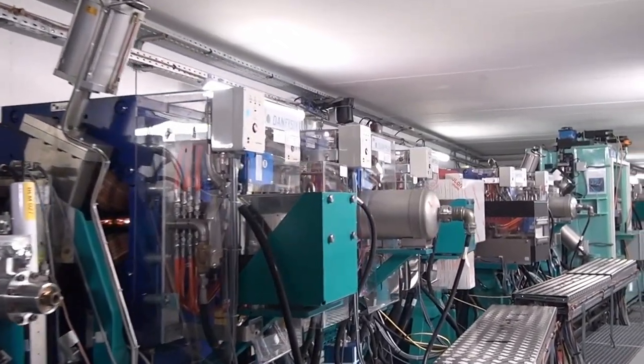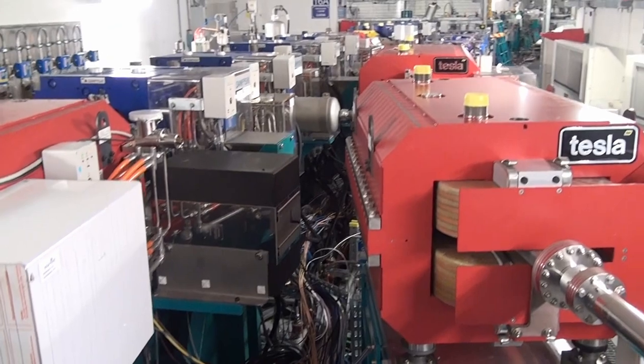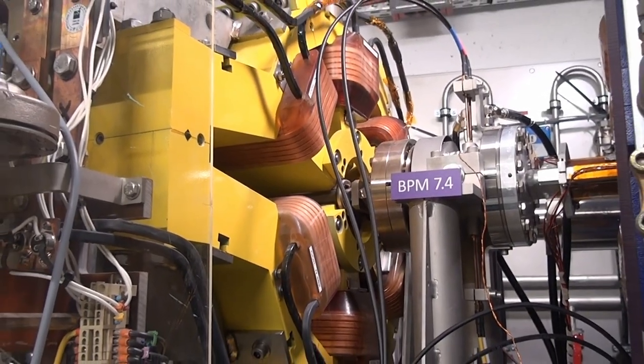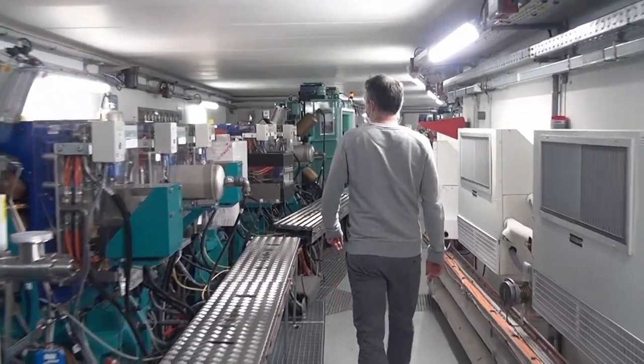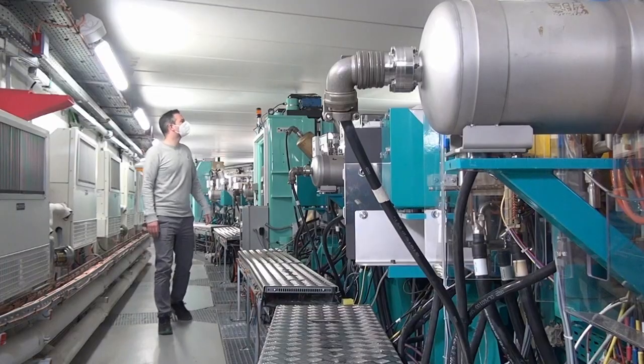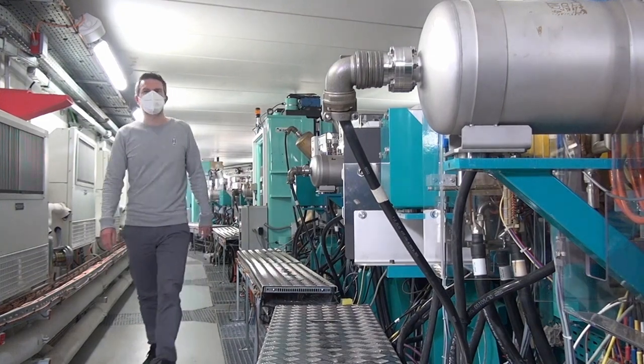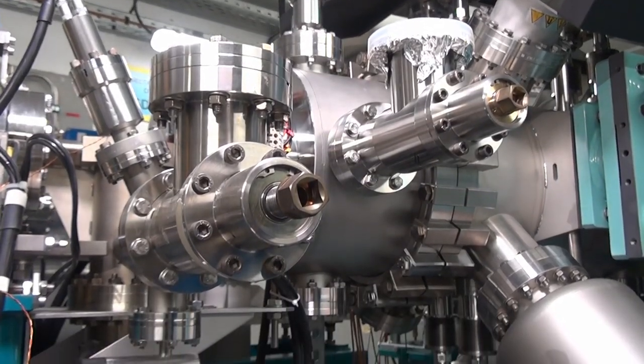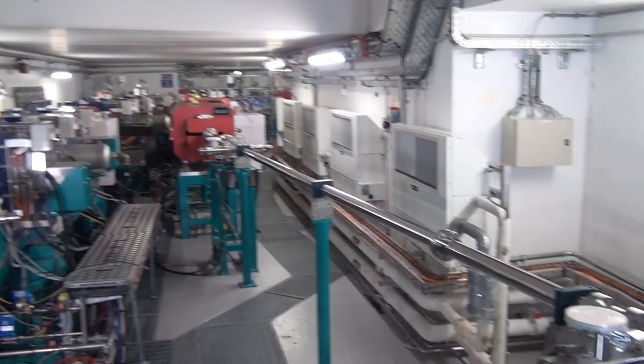Synchrotron light is produced each time the path of the particle beam goes through a bend. The electrical, magnetic and radio frequency equipment extends over several hundred meters. The whole setup is aligned with a precision of a hundredth of a millimeter, and its temperature is stabilized to a tenth of a Celsius degree.